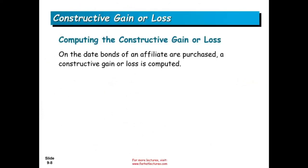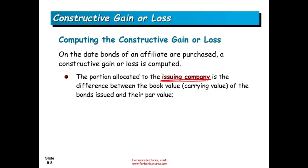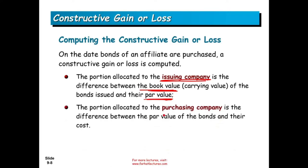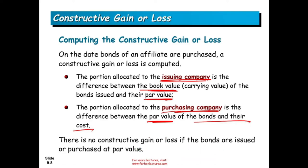On the date the bonds of an affiliate are purchased, a constructive gain or loss is issued. We have to allocate it between the two companies. For the issuing company, we look at the difference between the book value — the carrying value on their books — and the par value. For the purchasing company, it's the difference between the par value and what they paid, their cost. There will be no constructive gain or loss if the bonds are issued or purchased at par — meaning at face value.